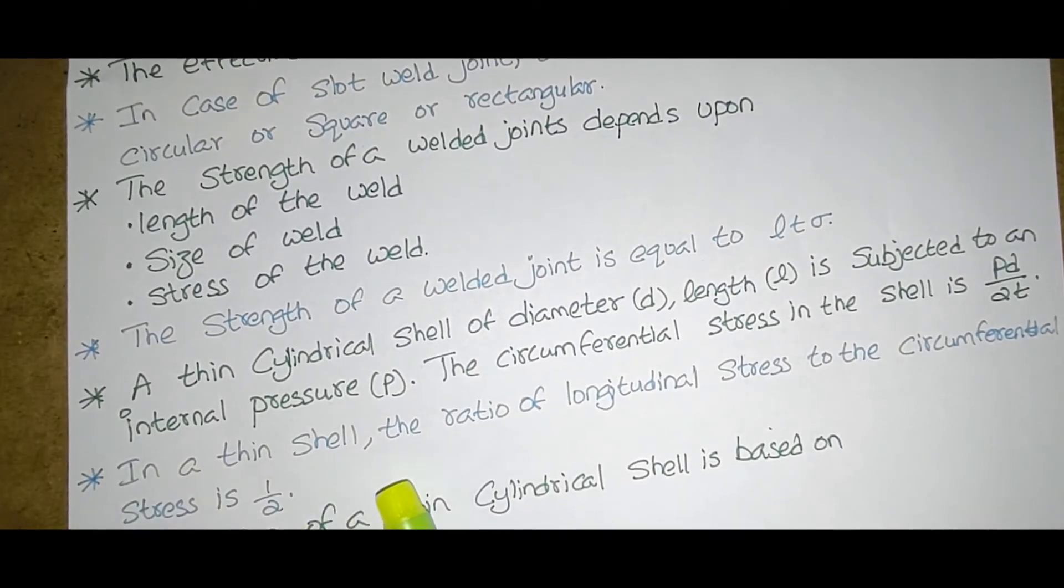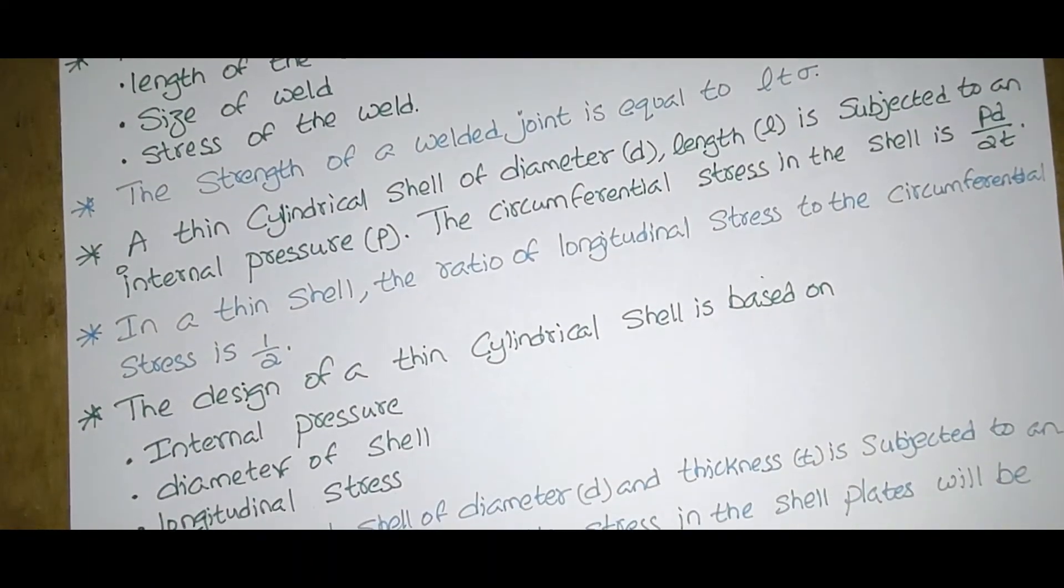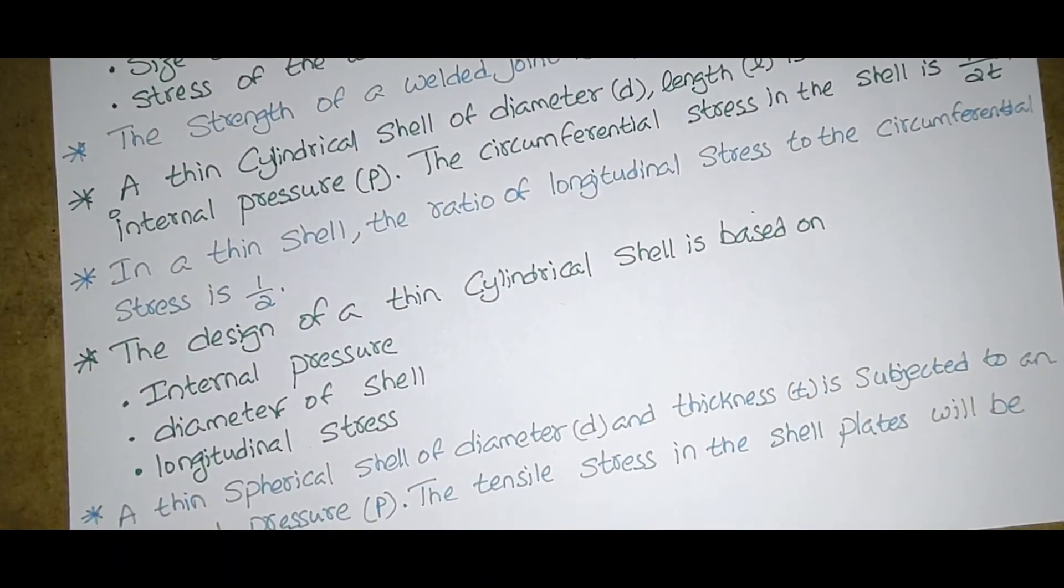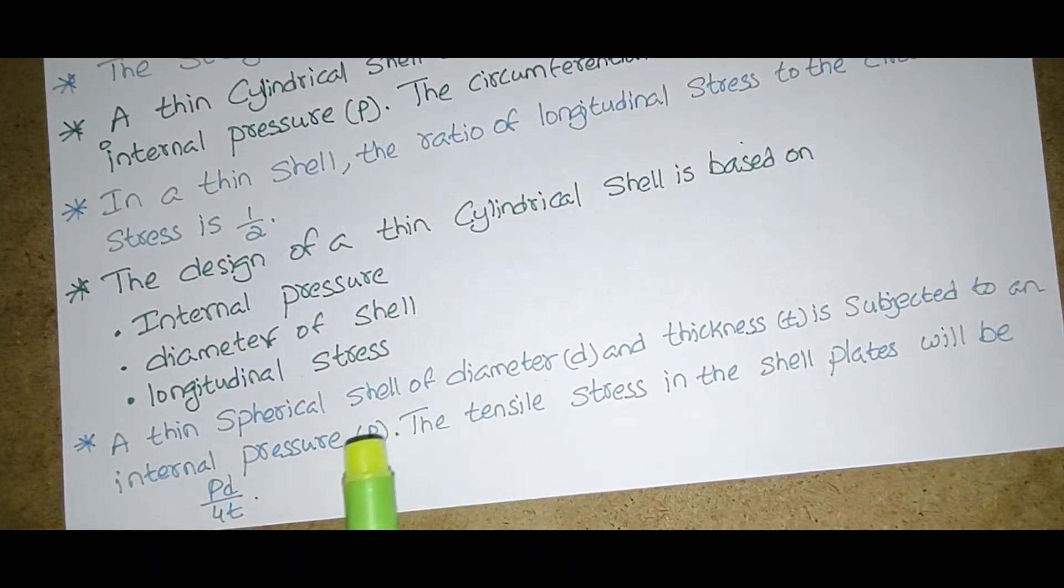In a thin shell the ratio of longitudinal stress to the circumferential stress is 1 by 2. The design of a thin cylindrical shell is based on internal pressure, diameter of shell, longitudinal stress.